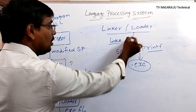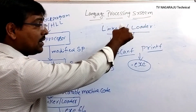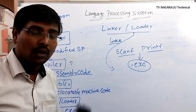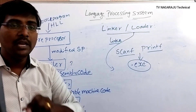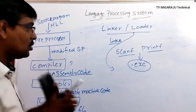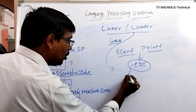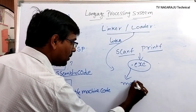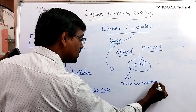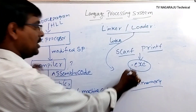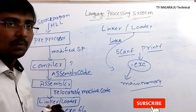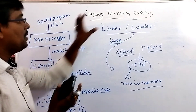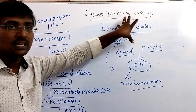The loader loads the executable file into main memory, since a program must be in main memory to execute. These are the four steps required for processing a language: preprocessor, compiler, assembler, and linker/loader.